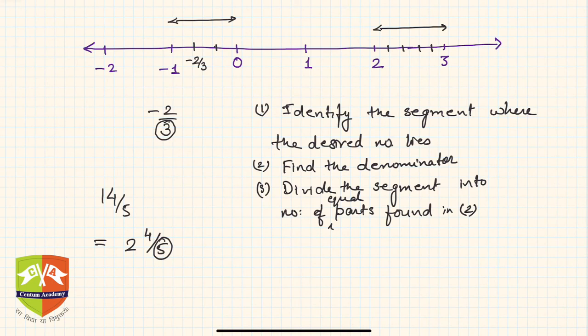Starting from 2, count 4 parts: 1, 2, 3, 4. This final point should be encircled, and that becomes 14/5. Hence, this point is 14/5, and this point is -2/3. This is how you represent any fraction or rational number on a number line.